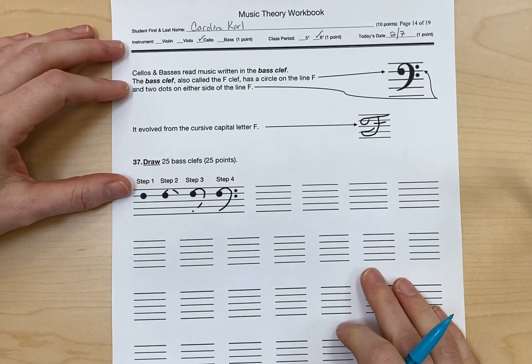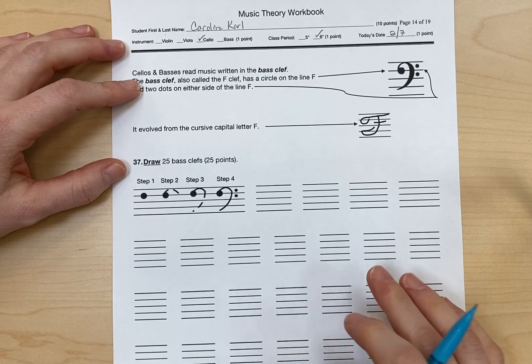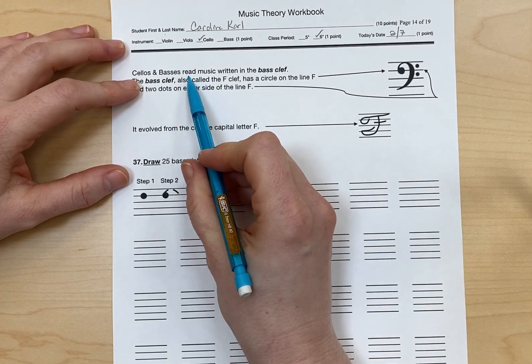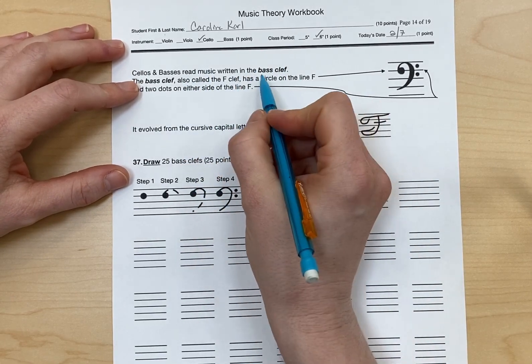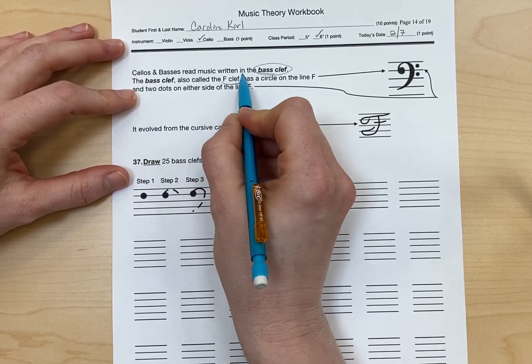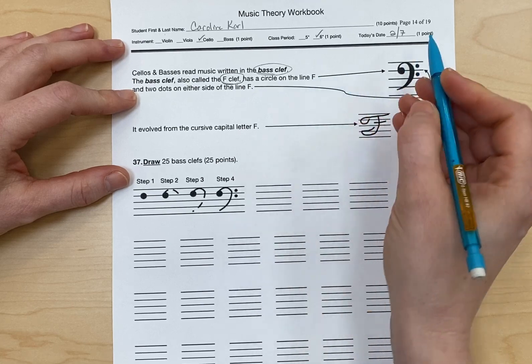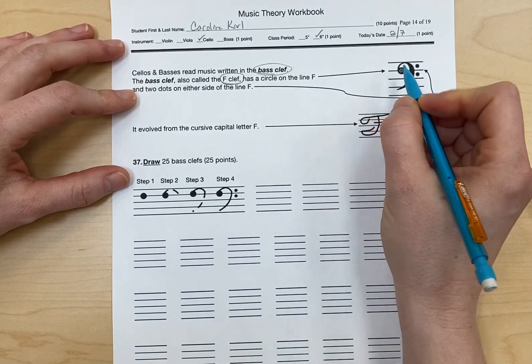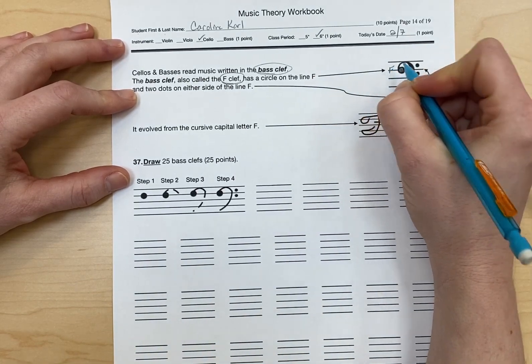And now let's read the information and directions. Cellos and basses read music written in the bass clef. The bass clef, also called the F clef, has a circle on the line F. So where this circle is, that line is F.